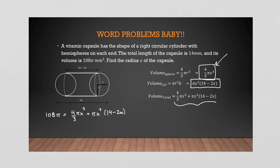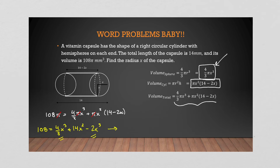Notice you have a common factor of π throughout, so you can cancel it out to make life easier. Now we have 108 = (4/3)x³ + x²(14 − 2x). Expand that x² in: 108 = (4/3)x³ + 14x² − 2x³. We want to get this equal to zero, so we'll combine terms and subtract 108 from both sides.